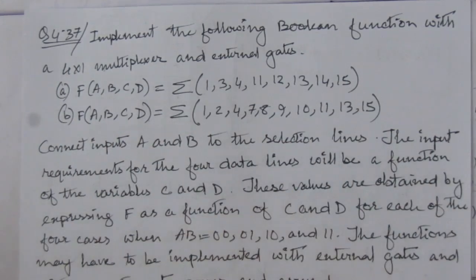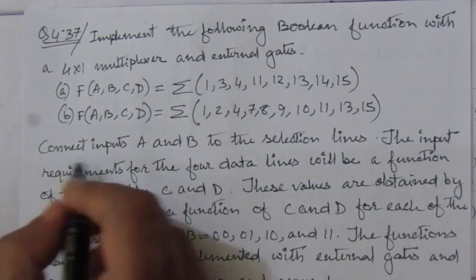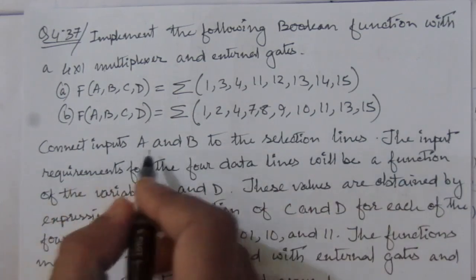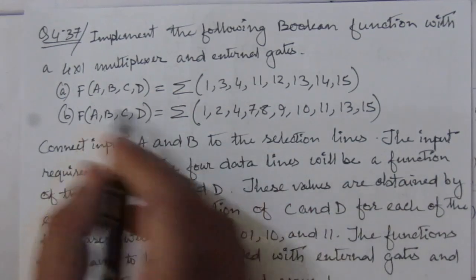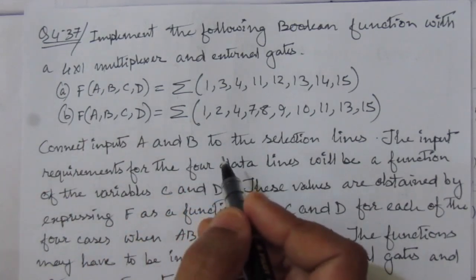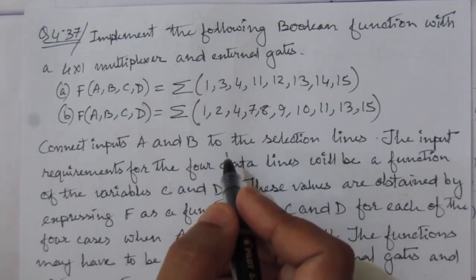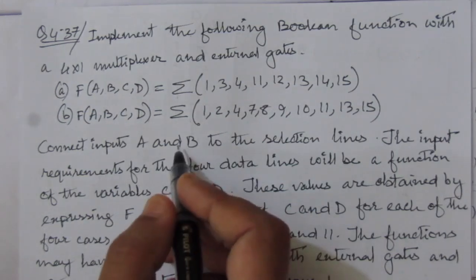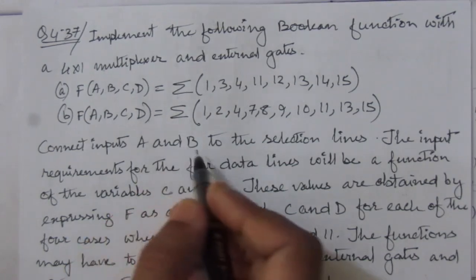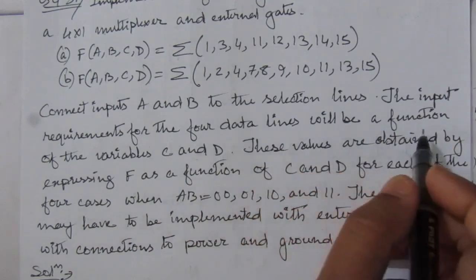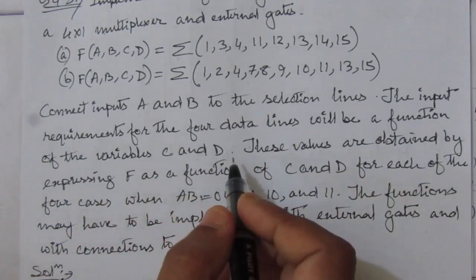There is some explanation on how to implement. Connect the input ports A and B to the selection lines. That means we have to make A and B the selection line inputs for the 4-to-1 multiplexer. The 4-to-1 multiplexer will have 2 selection lines because it has 4 inputs, and the 2 selection lines will be connected to A and B. Then the input requirements for the 4 data lines will be a function of the variables C and D.